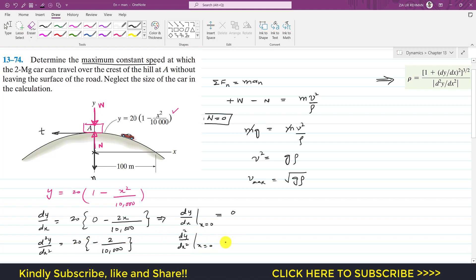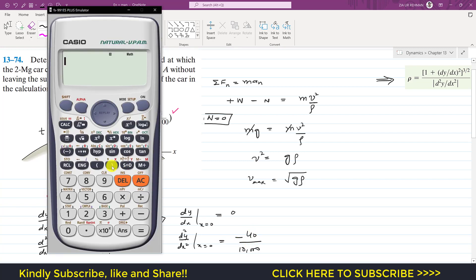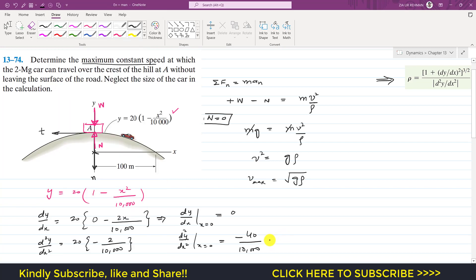There is no x so we need to simplify it. So this is minus 40 divided by 10,000, so minus 40 divided by 10,000. So this is minus 4 times 10 to the power minus 3.